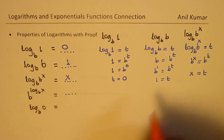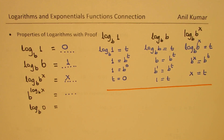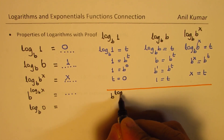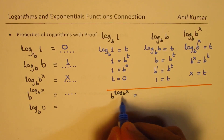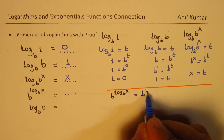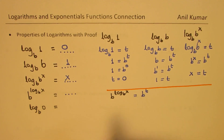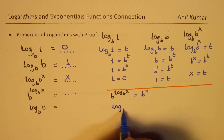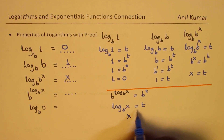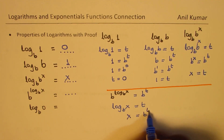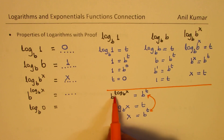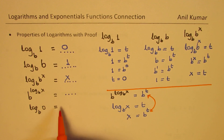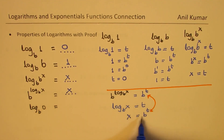Now let's consider the fourth one: b to the power of log to the base b of x. We write log to the base b of x as t, so the expression becomes b to the power of t. That means log to the base b of x equals t, and writing back into exponential form, x equals b to the power of t. So b to the power of log base b of x equals x.